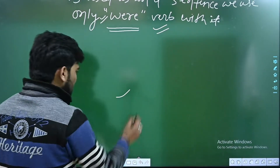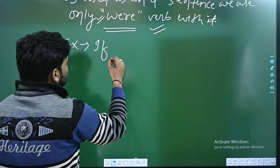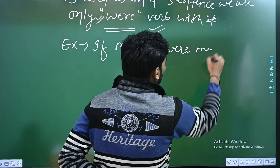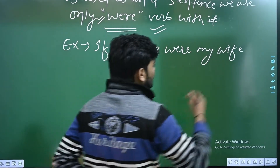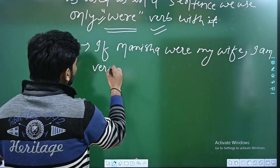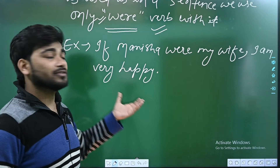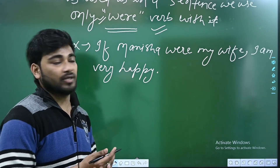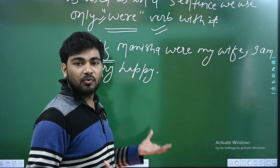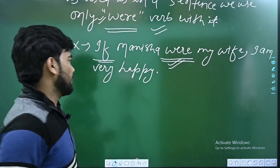Example number one: 'If Manisha were my wife, I am very happy.' Matlab agar Manisha meri wife hoti to main bahut khush hota. Main yahan suppose kar raha hoon — aisa kuch hai nahi — isliye 'were' use kiya. Yeh ek suppositional sentence hai aur aise sentences mein hum 'were' ke saath hi use karte hain.